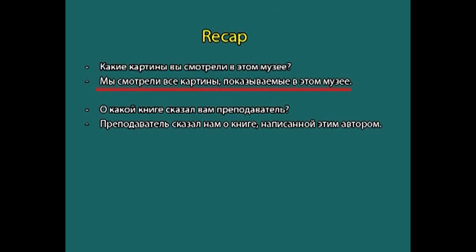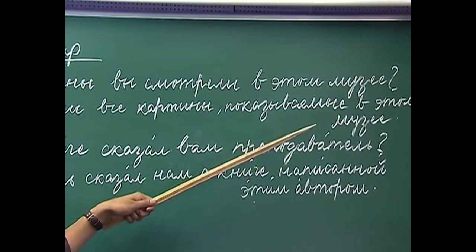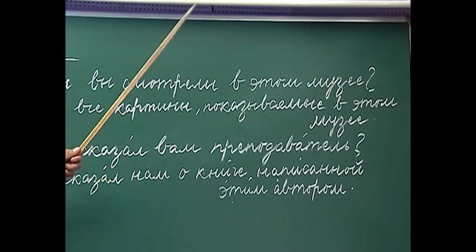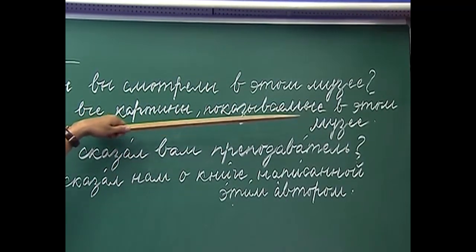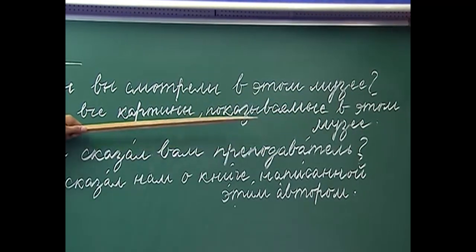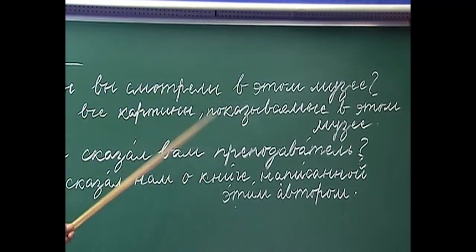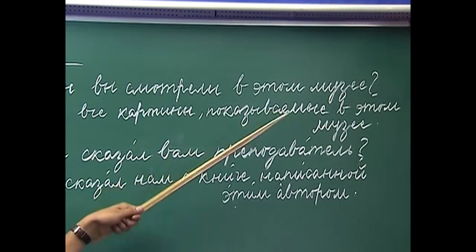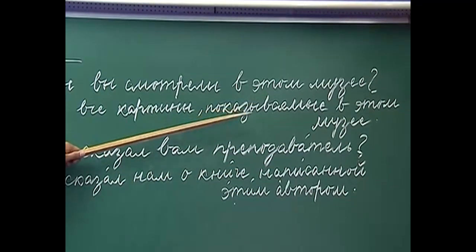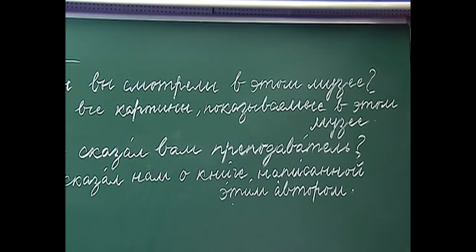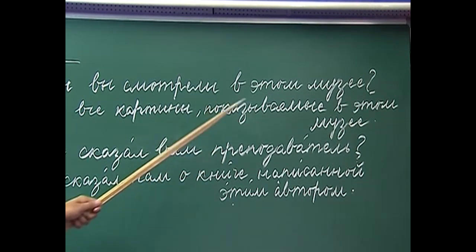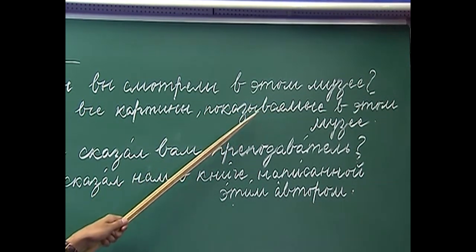'Kotorye pokazyvayut' — the sentence is in the present tense, that is why we are using present participle passive: 'pokazyvayemye'. How do we form the present participle passive? Present participle passive is generally formed from the first person plural by adding the adjectival ending -y/-e (kratke). So: 'pokazyvach', 'pokazyvayem', 'pokazyvayemi'.